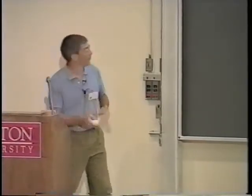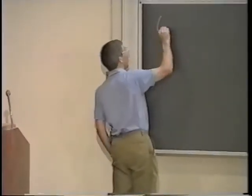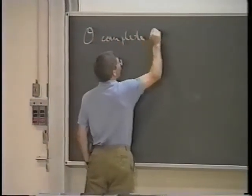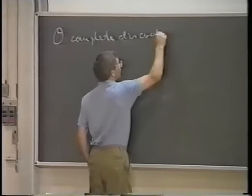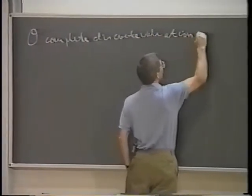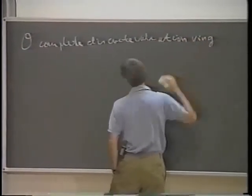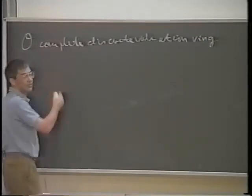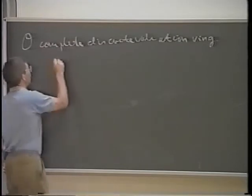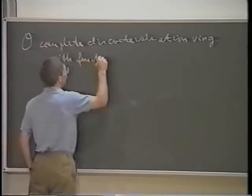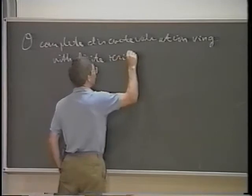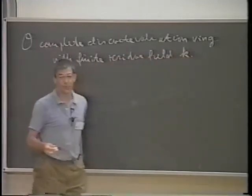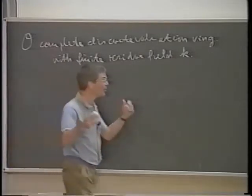Let me set up the notation. Like yesterday, O is a complete discrete valuation ring. But unlike yesterday, this time I insist that its residue field is finite. The basic example, however, is the same — you can think of Z_p.